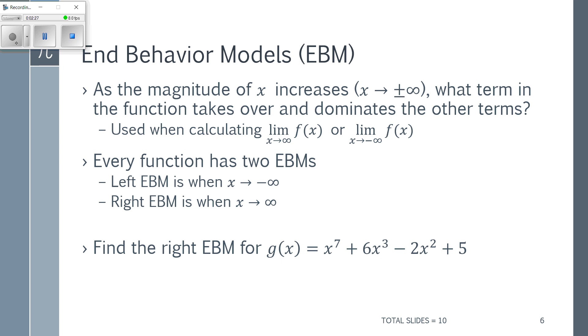When you get comfortable with this, the biggest mistake is that people try to use end behavior models for everything. They can really only be used for limits as X is going to positive or negative infinity.